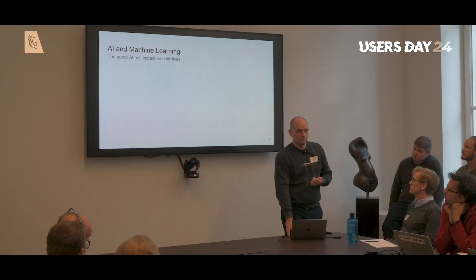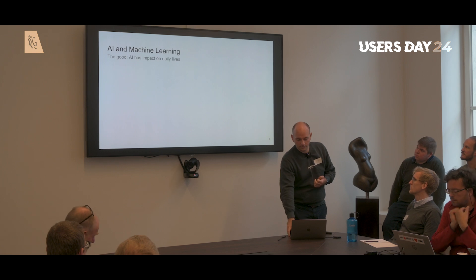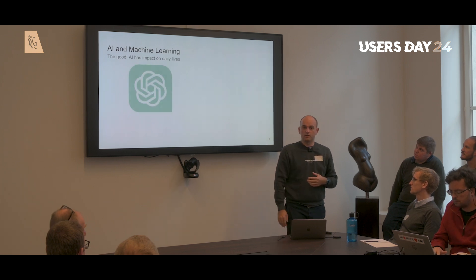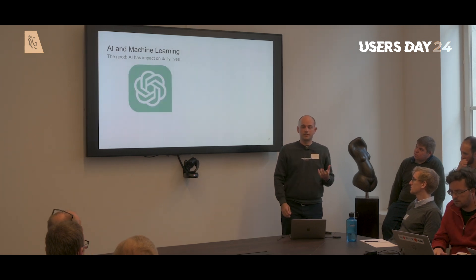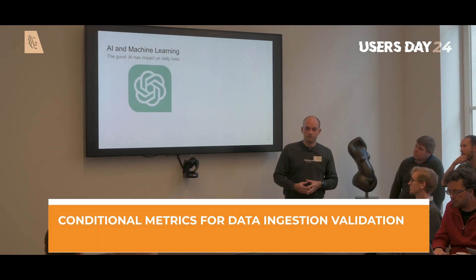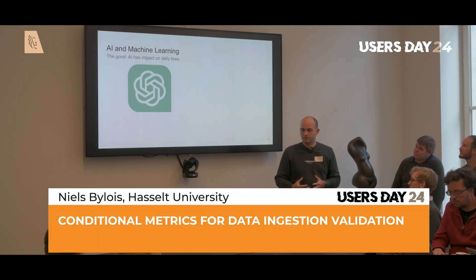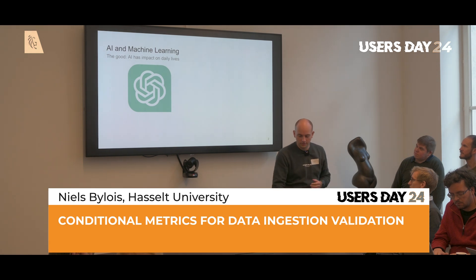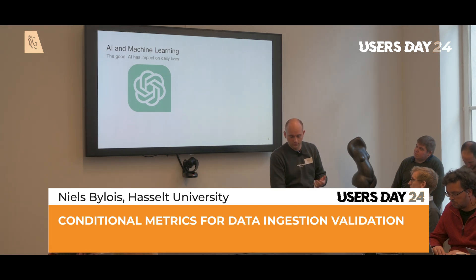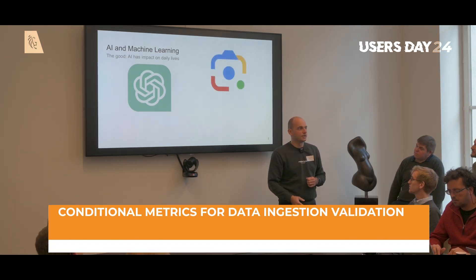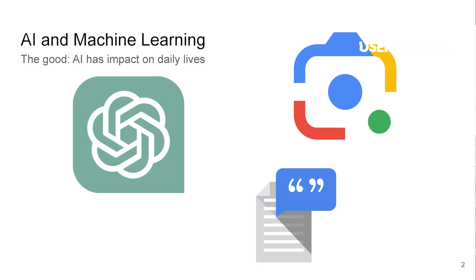AI has a very big impact on our daily lives. For example, we can ask a question to ChatGPT and it will give us an answer within a few seconds without having to search on the internet ourselves. Or when we see something interesting on the street, we can take a picture of it and Google Lens will tell us everything about it and give us some extra Google-like information.